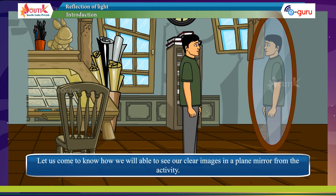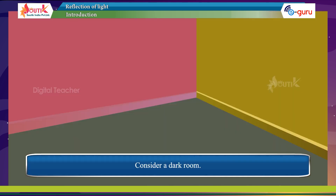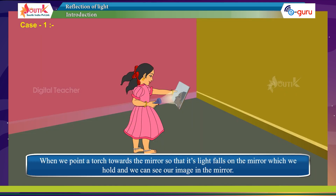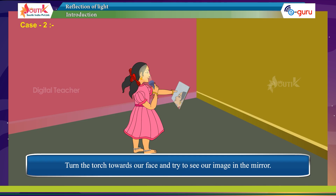Let us come to know how we are able to see our clear image in a plain mirror from this activity. Consider a dark room. Case 1: When we point a torch towards the mirror so that its light falls on the mirror, we can see our image in the mirror. Case 2: Turn the torch towards our face and try to see our image in the mirror.